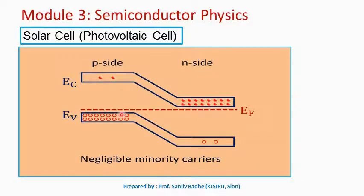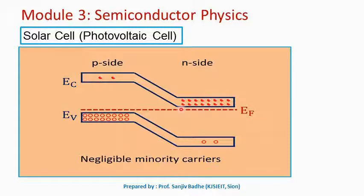This is the energy band diagram of a p-n junction diode. In this diagram, the Fermi level at equilibrium is constant. On the n-side, the conduction band is close to the Fermi level, and on the p-side, the valence band is close to the Fermi level. The conduction band has a large number of electrons on the n-side, while the valence band on the n-side has very few holes.